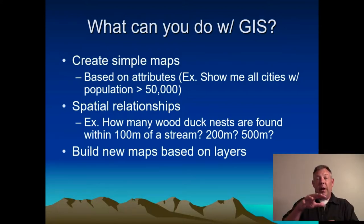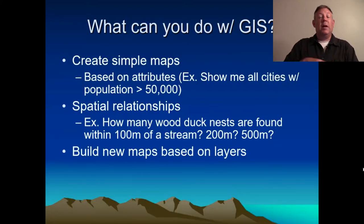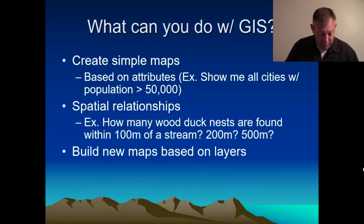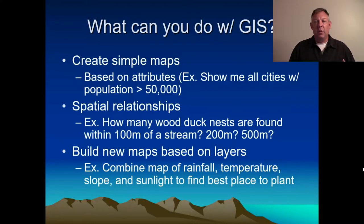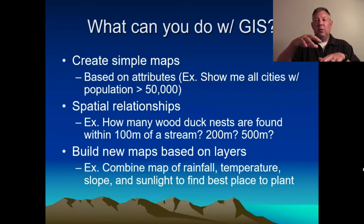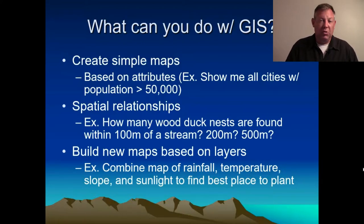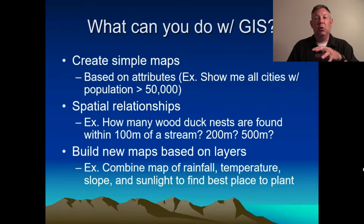We could take several layers and combine them to make a new map and look at the relationships between those layers. For example, you could look at rainfall, temperature, slope, soil type, and sunlight, and combine them. Then, if you knew a plant's specific requirements for all those parameters, you could have the software tell you where you should put or look for that plant based on those parameters.